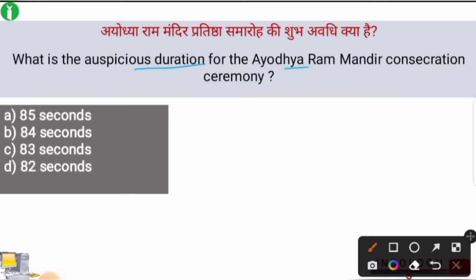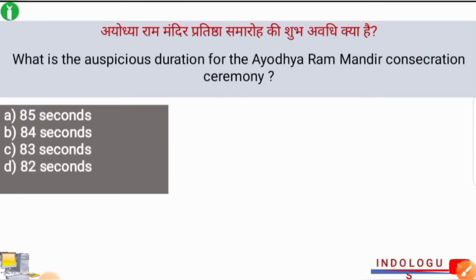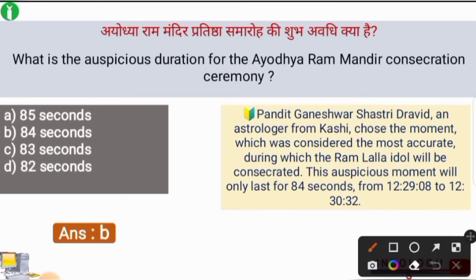What is the auspicious duration for the Ayodhya Ram Mandir consecration ceremony? The correct answer is option number B, i.e. 84 seconds. Pandit Ganeshwar Shastri Dravid, an astrologer from Kashi, chose the most auspicious moment during which the Ram Lalla idol would be consecrated. This auspicious moment lasts for 84 seconds, specifically from 12:29:08 to 12:30:32.